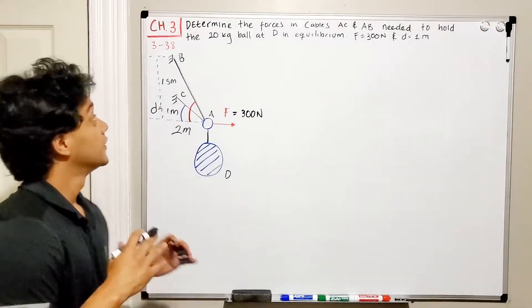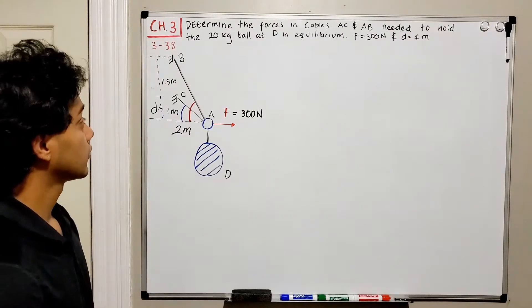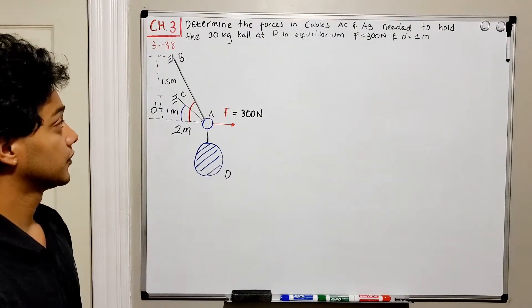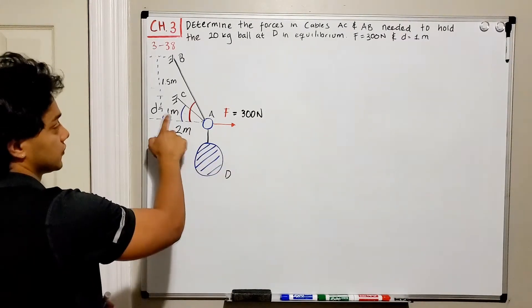Determine the forces in cable AC and AB needed to hold the 20-kilogram ball at D in equilibrium if force is equal to 300 newtons and D is equal to 1 meter.